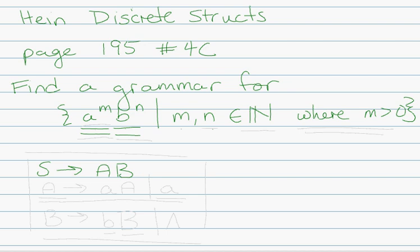For the a to the m part, m has to be greater than zero. When we think about how to expand A, we can do the standard expansion — expand it into another a, adding another a — but often we end with lambda. In this case, since m has to be greater than zero, we're going to end with a. My first step could just be: go from the non-terminal capital A into one single little a. What we don't want is to end up with lambda. So here are two productions that work for that.